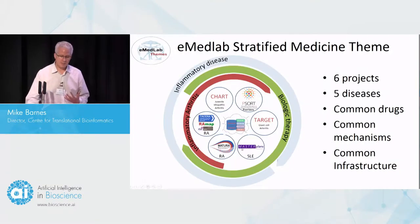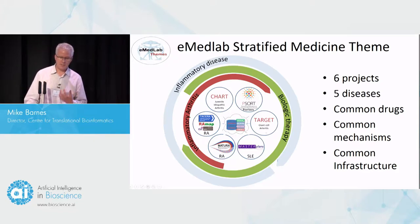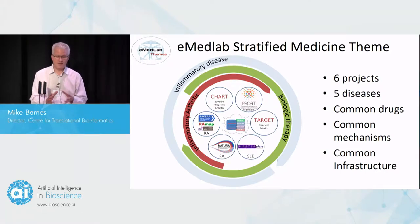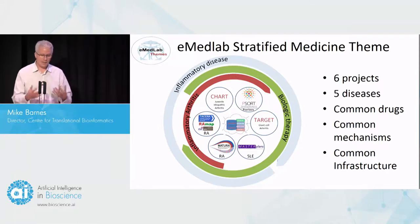We've got the RA projects, some other immune projects, and a juvenile arthritis project — six projects, five diseases, common drugs, common mechanisms, common infrastructure. This all coming together makes a compelling case for a pan-immune analysis.